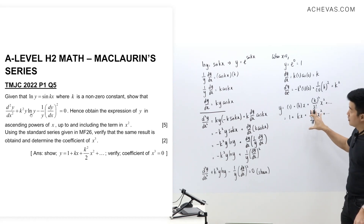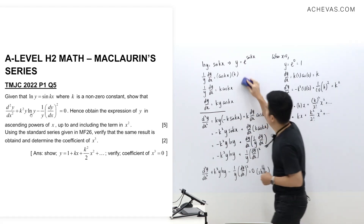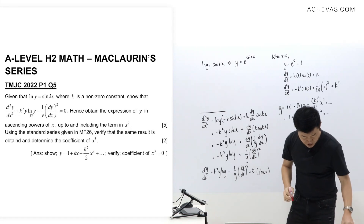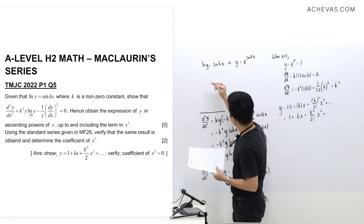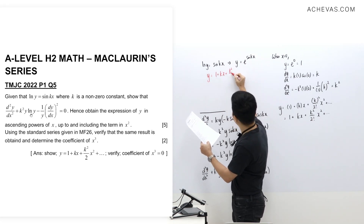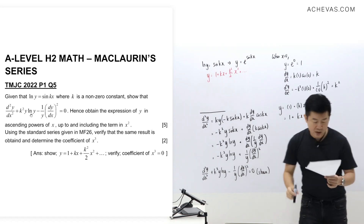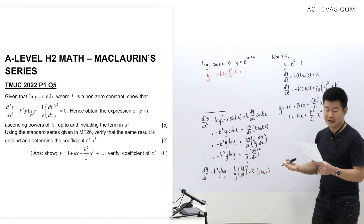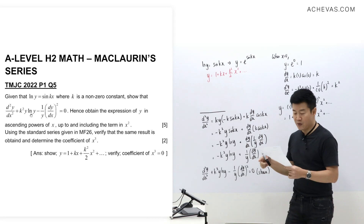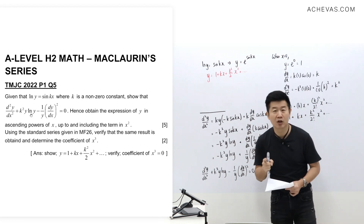We have obtained y = 1 + kx + (k²/2)·x² + … The question now asks us to verify this using the MF26 standard results. It also asks us to determine the coefficient of x³. So we need to use MF26 to verify up to x² and additionally find the x³ coefficient.